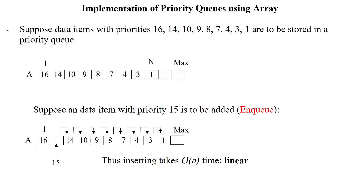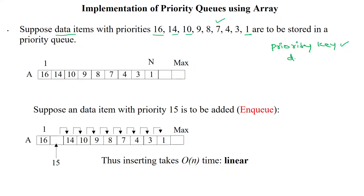Welcome to implementation of priority queue by using the array data structure. The given data is 16, 14, 10, etc., and 1. Here the data itself is acting as a priority key, so data is playing a dual role: one is the priority key role and another one is the value for the data.